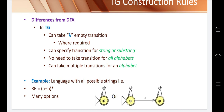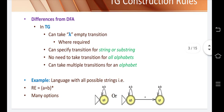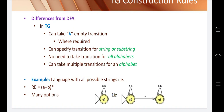The transaction can be a string or a substring — it can take a transaction for a whole string or for a substring, but in DFA you cannot take a transaction for a string or substring. The third relaxation is no need to take a transaction for all alphabets. In DFA, you must take a transaction for all alphabets in every state, but in transaction graph there is no such requirement.